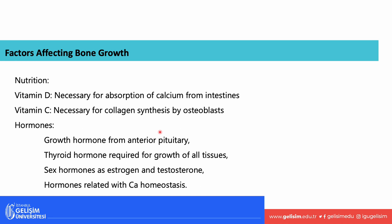What are some of the factors affecting bone growth? There are many. Nutrition is one of them — vitamin D is needed for absorption of calcium from the intestines. Vitamin D also has roles in our immune system. Vitamin C is also necessary for synthesis of osteoblasts. Many hormones also play a role: growth hormone secreted by the anterior pituitary gland is needed to build bone. Thyroid hormones are also required for growth of all tissues of the body, including bone. Sex hormones such as estrogen and testosterone are needed for bone growth. Hormones related to the homeostasis of calcium are also required. If there are any deficiencies or interruptions in one of these hormones, it will affect the maintenance and growth of bone.